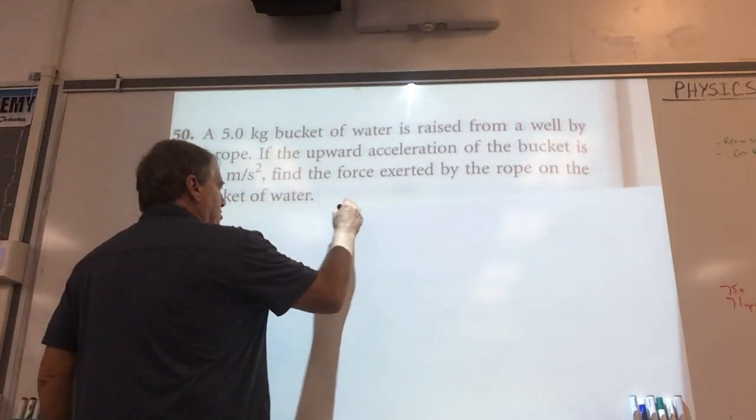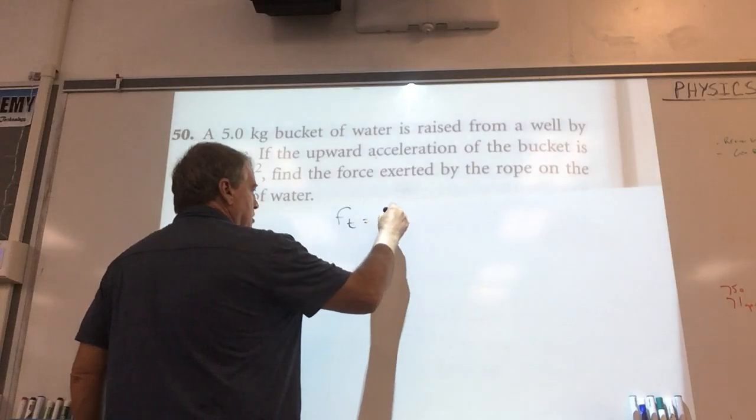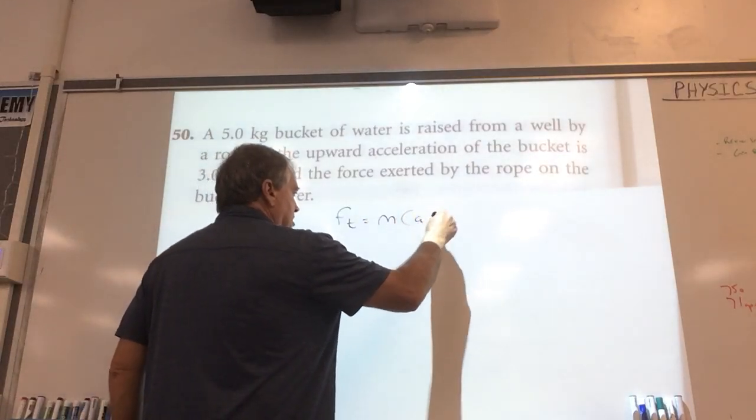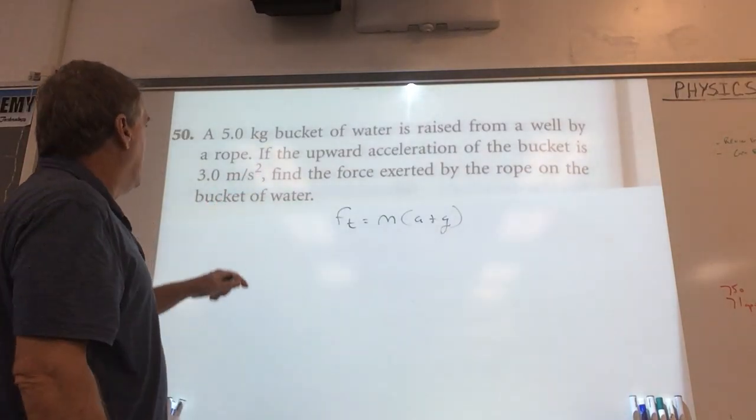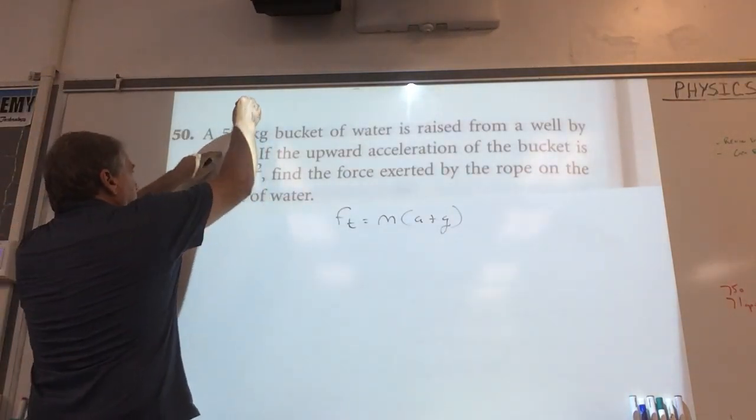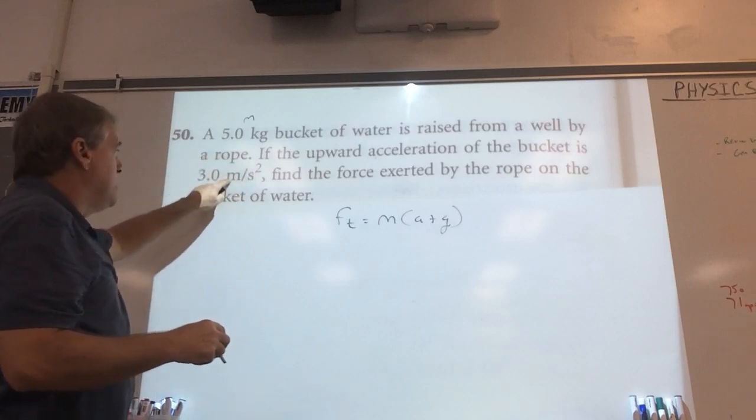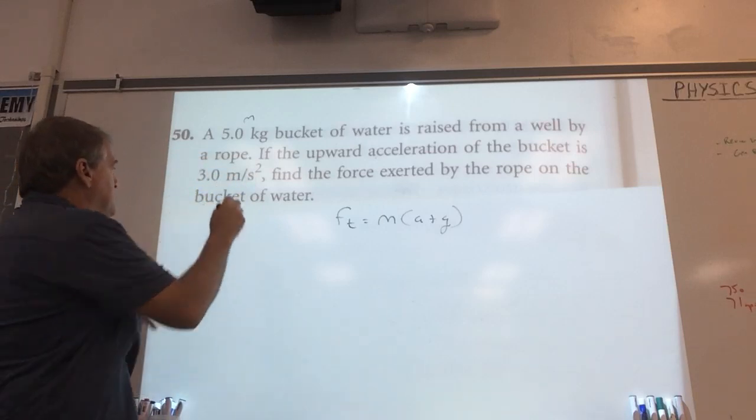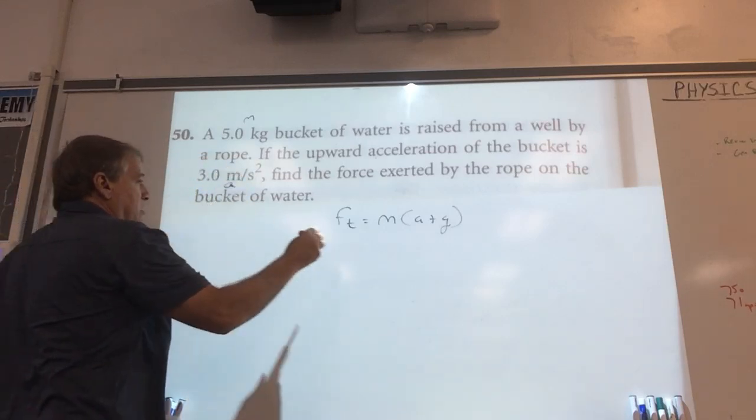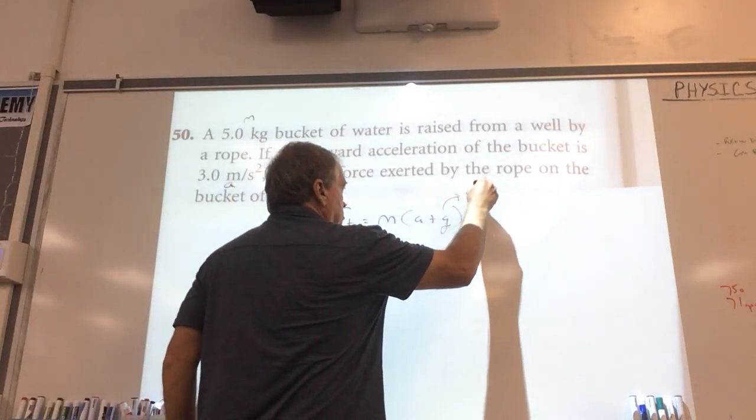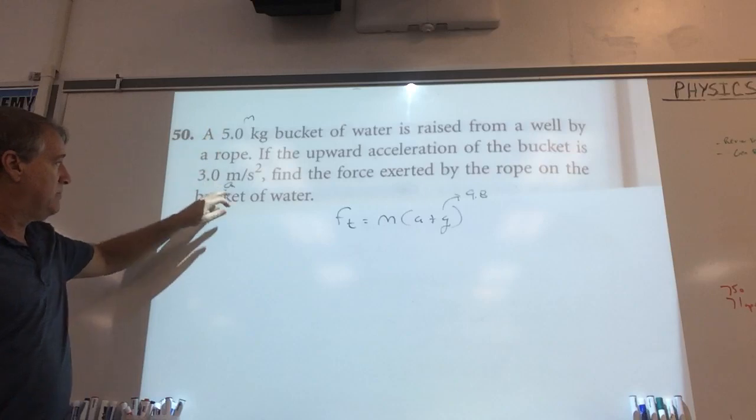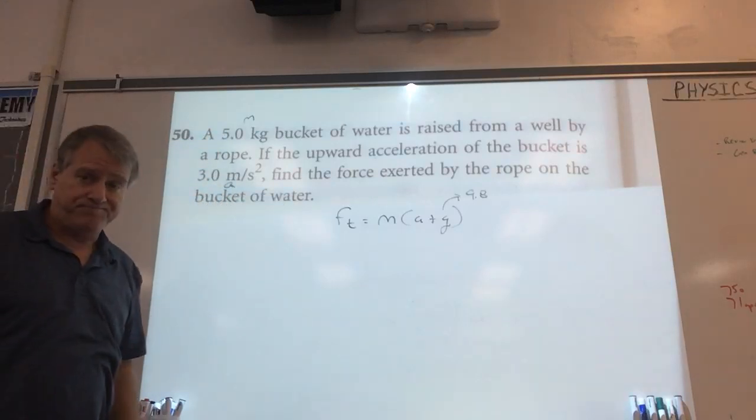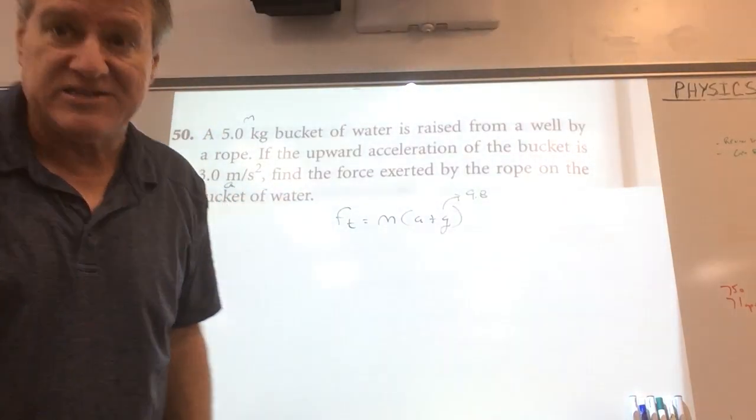We know that the force of tension is equal to m times a plus g. And force of tension is just the force you've got to pull up with. Well, that sure looks like an m right there. That sure looks like an a. It's got a meter per second squared. And we know that g is 9.8. So is it as simple as this times that plus 9.8? Yes, it is.